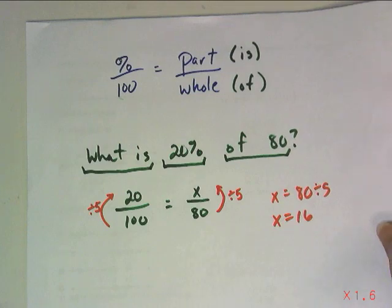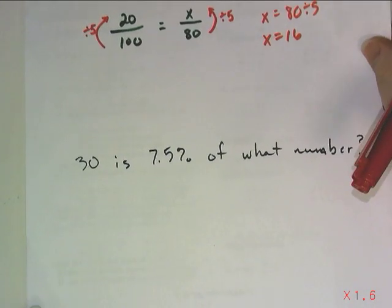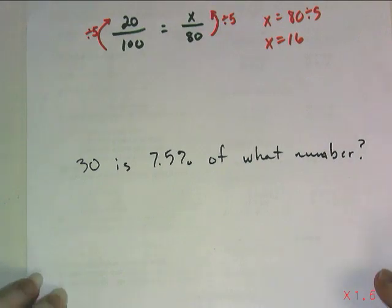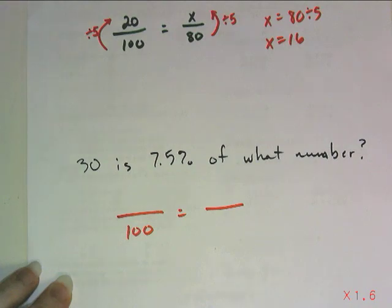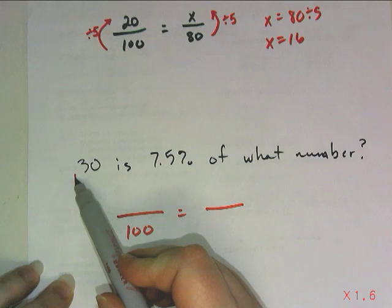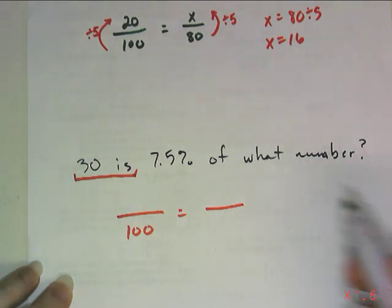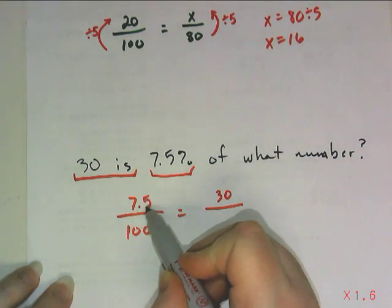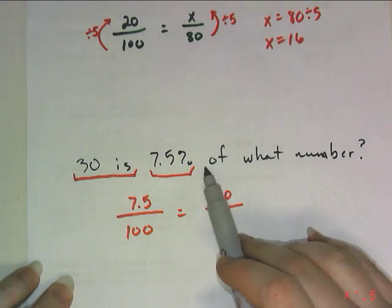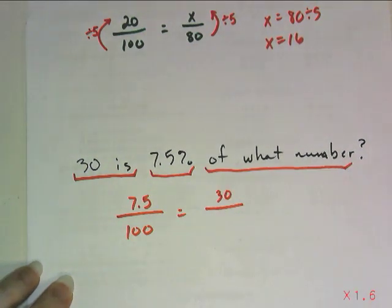Let's take a look at another example. 30 is 7.5% of what number? So I can already start by filling in my fraction bars, my equal, my 100. Those will all be there. 30 is. So that's my part. That goes at the top on the right-hand side. 7.5%. So I know that goes above the 100. Of what number? So that's the part that's missing. The 'of' is my keyword for my whole. So that comes down here. I don't see an easy scale factor that I can apply right now. So that means I want to solve this algebraically.